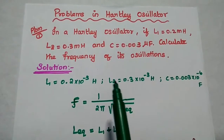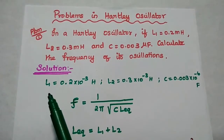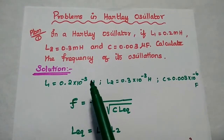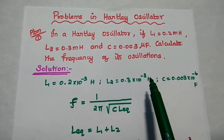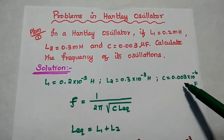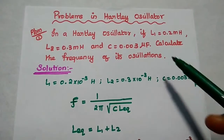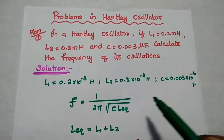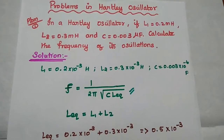In the solution part, first we have to write the given data: L1 is equal to 0.2 into 10 to the power minus 3 Henry, L2 is equal to 0.3 into 10 to the power minus 3 Henry, C is equal to 0.003 into 10 to the power minus 6 farad. We are going to find out the frequency of oscillation.